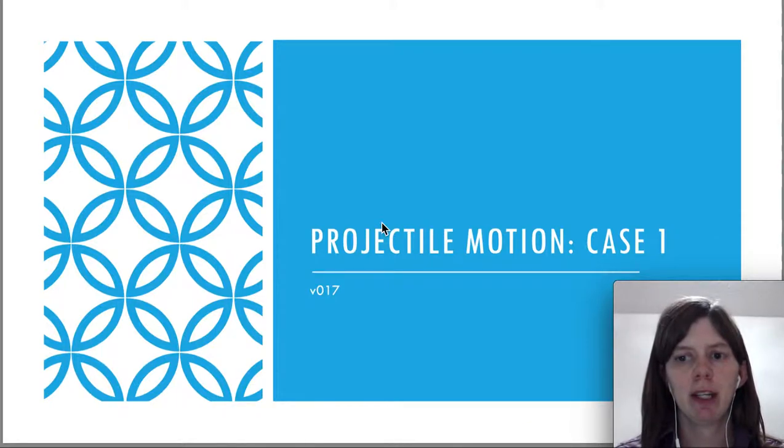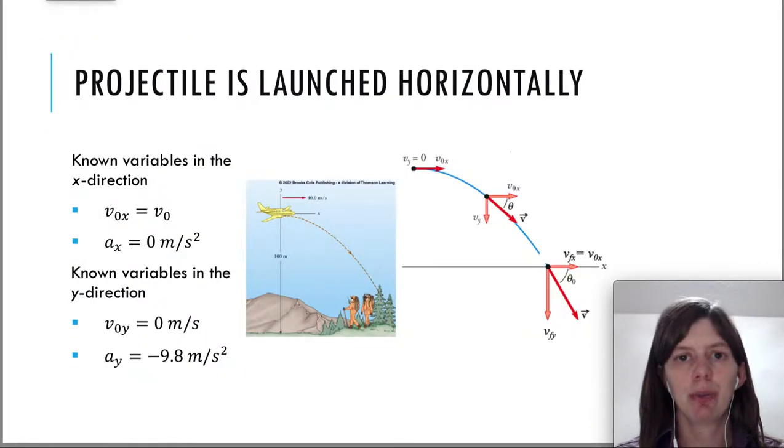Hello, this is video number 17. In this video I'm going to go over the first case of projectile motion. We talked in a previous video about what projectile motion was. We said that it just meant that the object was only under the influence of gravity, but it was two-dimensional motion.